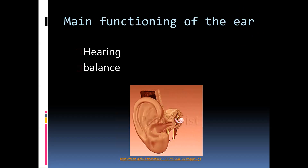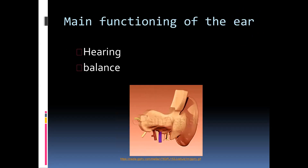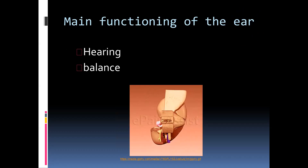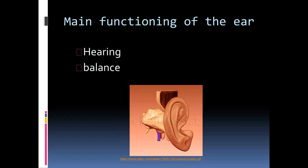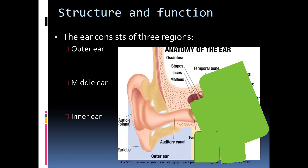The ear has two main functions: it is the organ responsible for hearing as well as the organ responsible for balance. From our normal knowledge we know there's an outer flap known as the pinna, and it has a tiny opening which leads to a passage, and then we know about the eardrum. Those structures make up what we know as the outer ear.